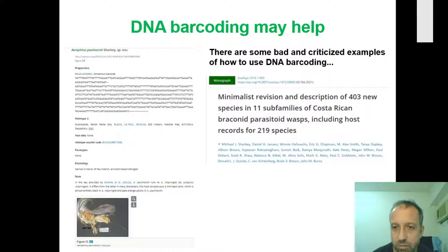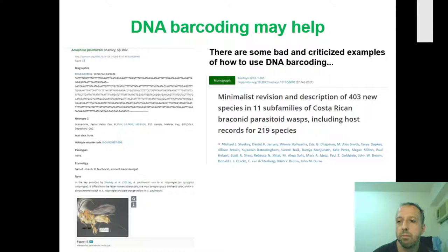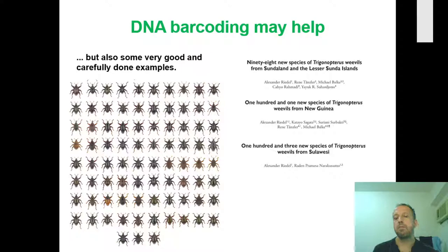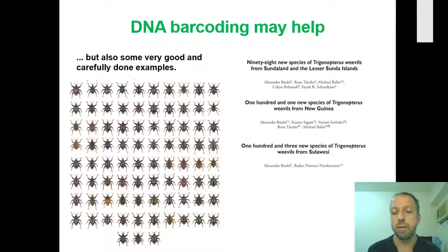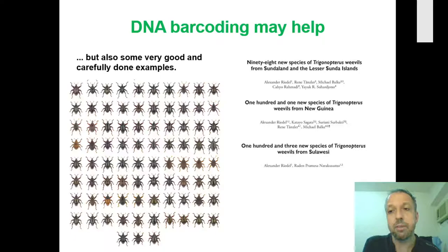This approach has been criticized. If used in a quick, dirty way, you can do a quite horrible job — as happened with a paper that described more than 400 new species of Braconidae based basically only on this short DNA sequence and a bad photo, which was criticized for very good reasons. But there are also good examples. You may know the nice studies by Alex Riedel focused on leaf litter weevils of the genus Trigonopterus, combining DNA barcoding with carefully done systematics and morphology. His work was really brilliant and was the kind of dream for me to do something similar for Taiwanese leaf litter beetles.